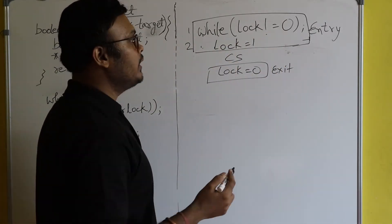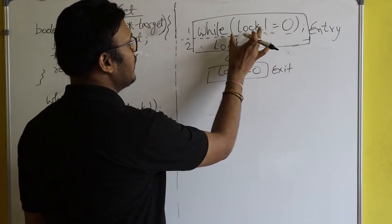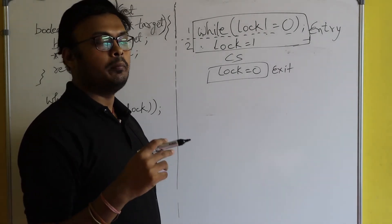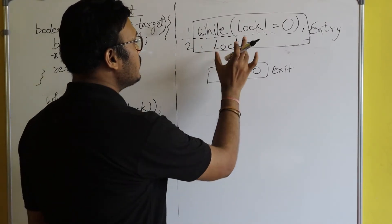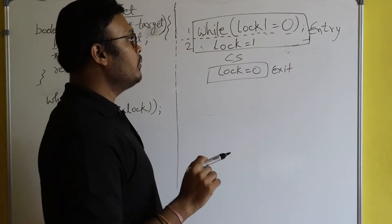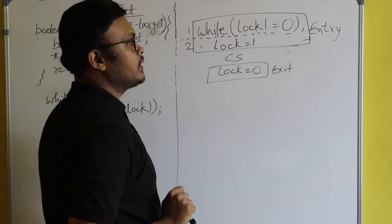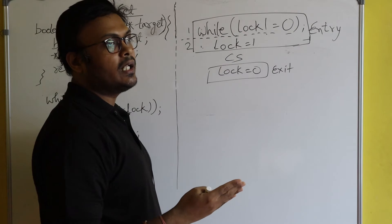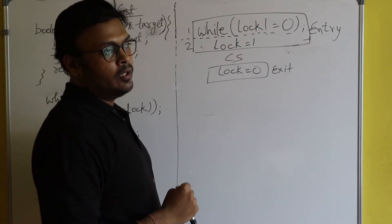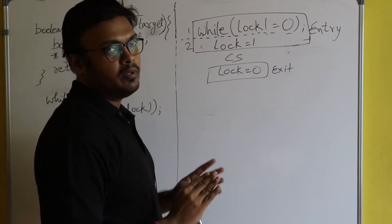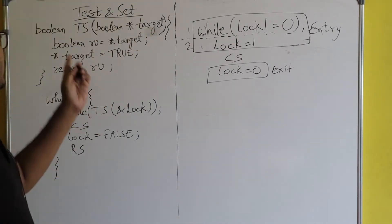At that point, preemption happened, and that led to the trouble — mutual exclusion got violated. If these two lines were combined into a single atomic line, there would be no preemption at all, and mutual exclusion would be maintained. So now in this video I will discuss about the test-and-set instruction.